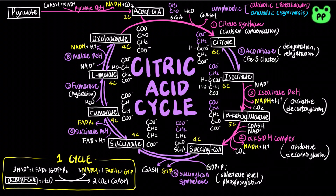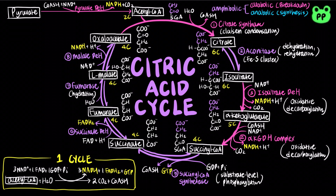Most steps in the citric acid cycle are reversible, except for steps 1, 3, and 4, which are subject to allosteric regulation. In general, since the citric acid cycle generates NADH and FADH2 as energy sources for the electron transport chain, it is activated by a low energy state and inhibited by a high energy state.